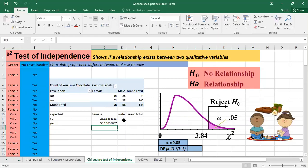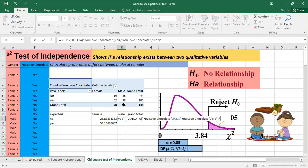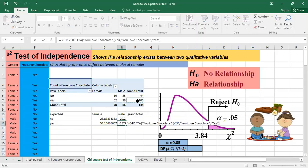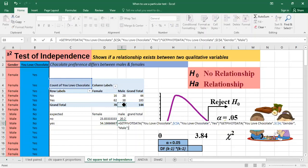The same will be done for males. It's the total rows times the total column divided by the grand total. And the same here, total row times the total column divided by the grand total.